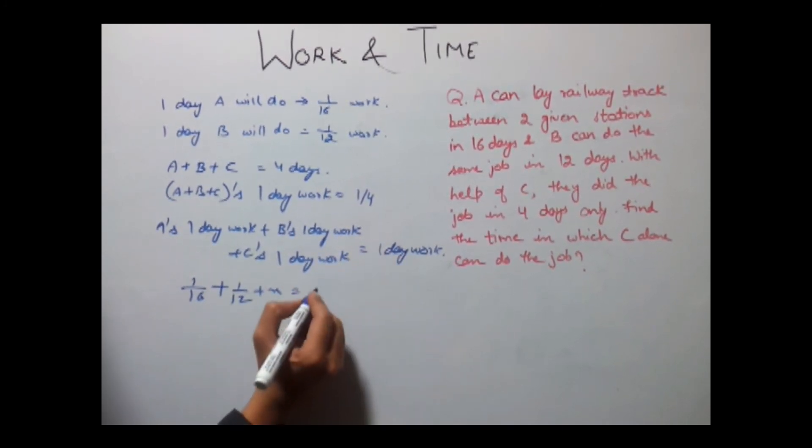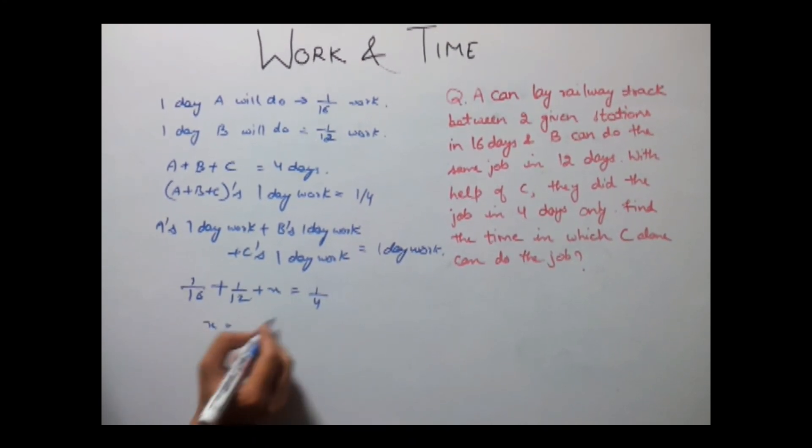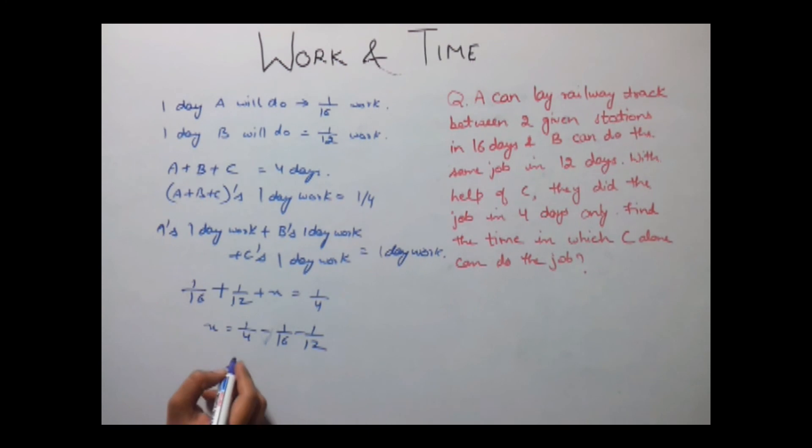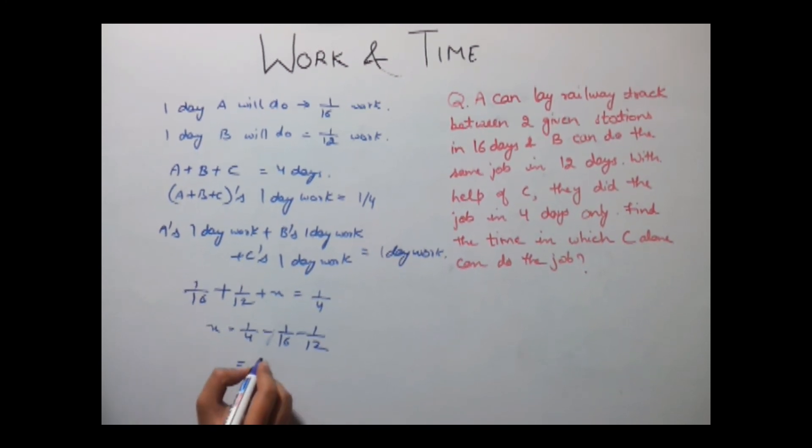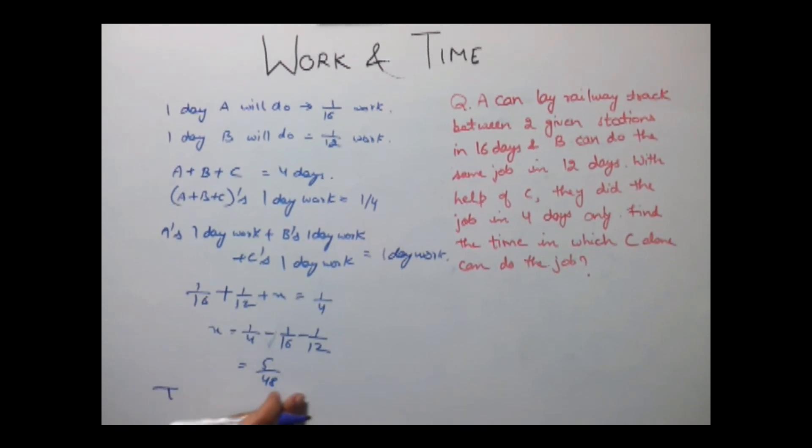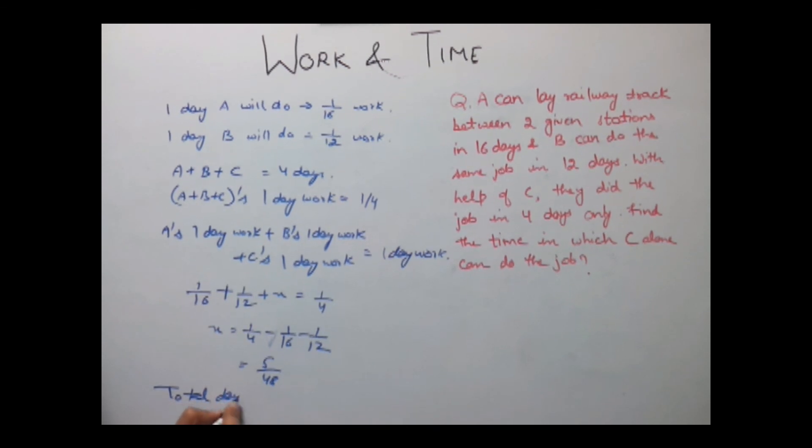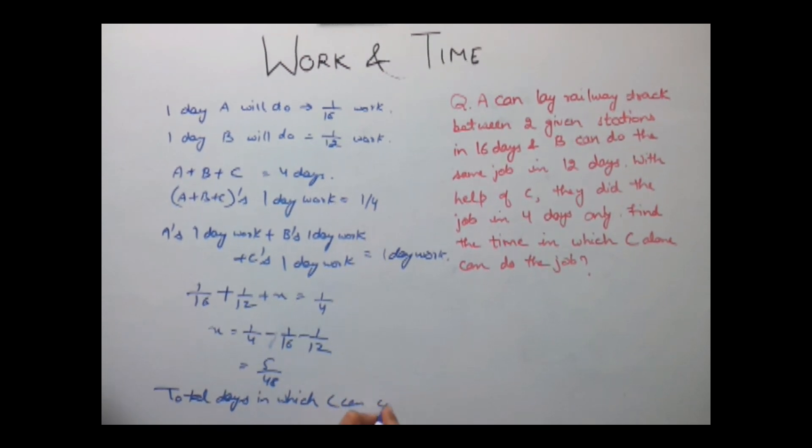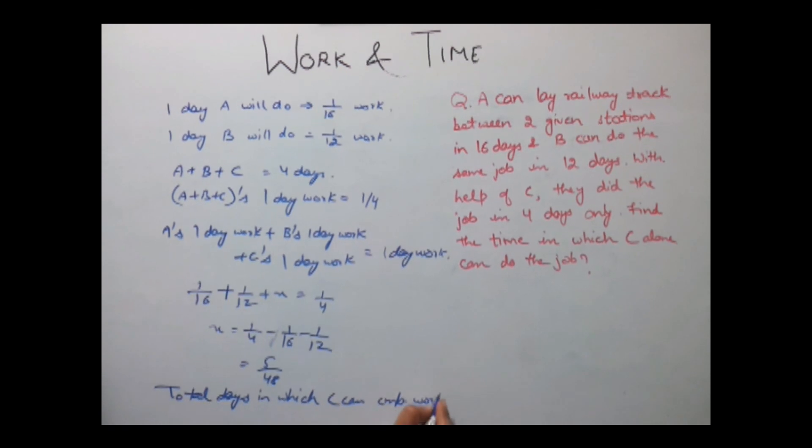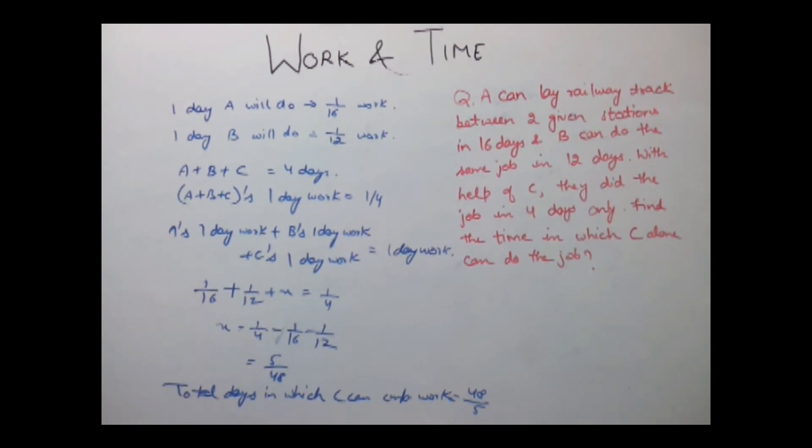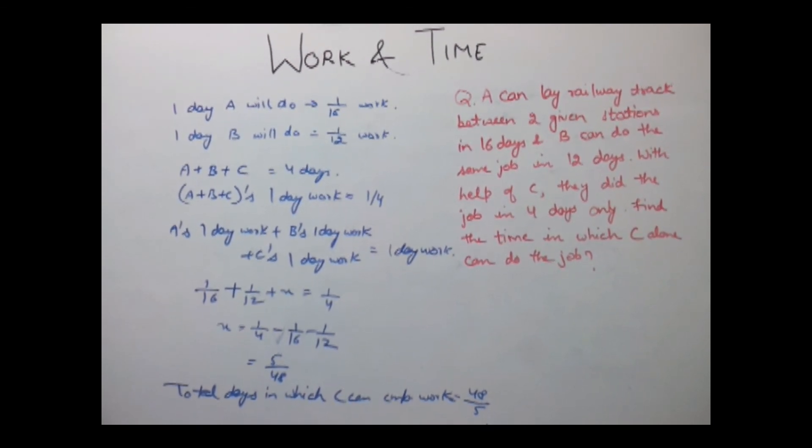So value of X is equal to 1 by 4 minus 1 by 16 minus 1 by 12. Taking LCM, solve this, you will get 5 by 48. Now this is the work done by C in one day, so total days in which C can complete the work will be its reciprocal. So total days in which C can complete the work will be 48 by 5 or say 9 and 3 by 5 days.